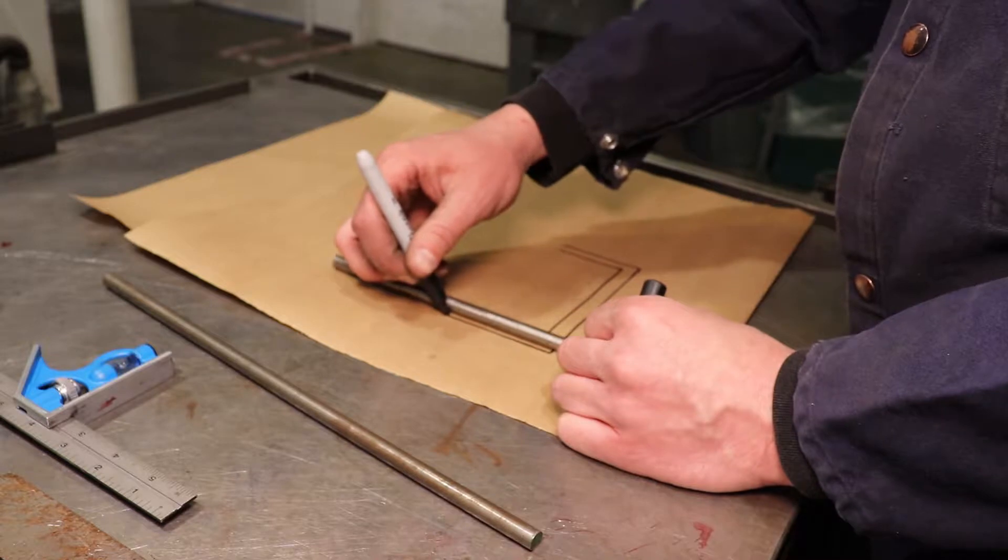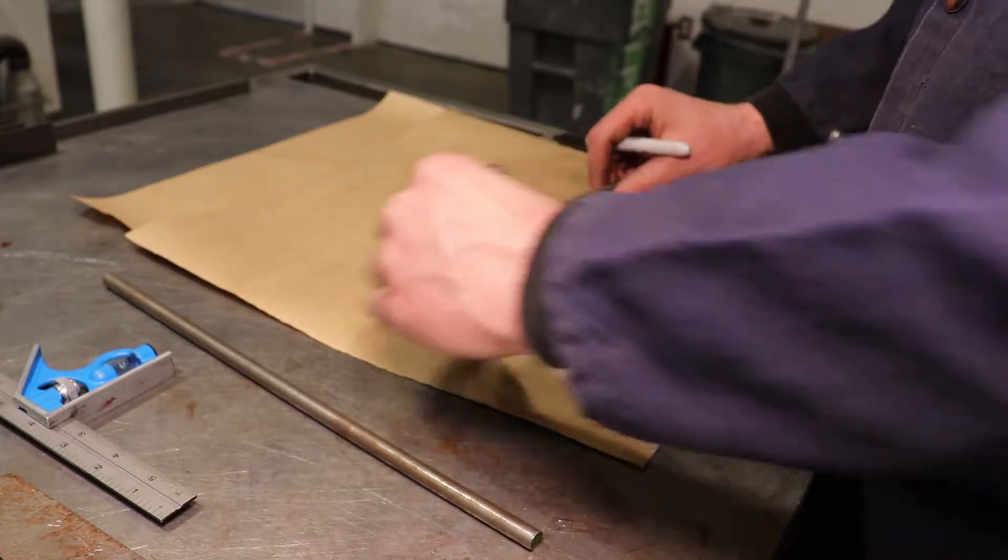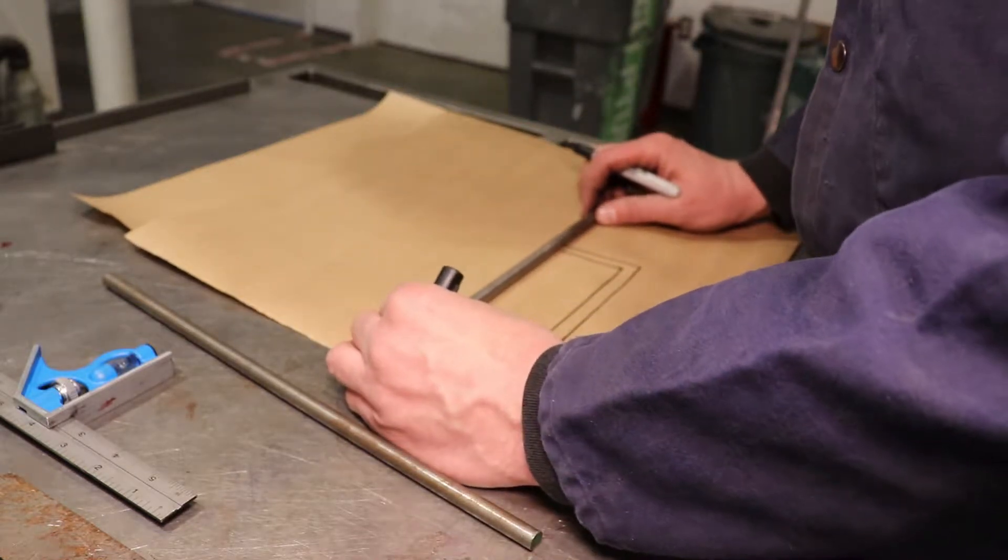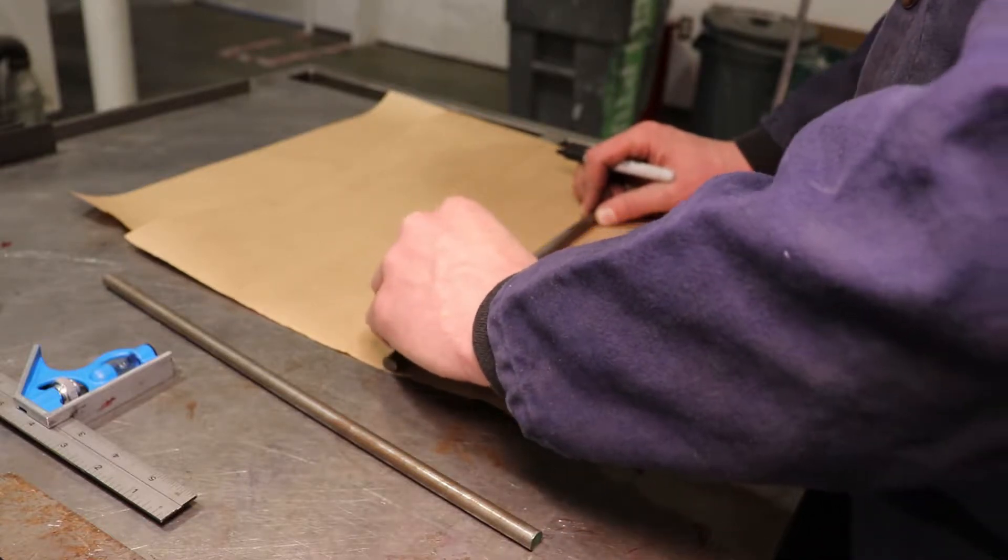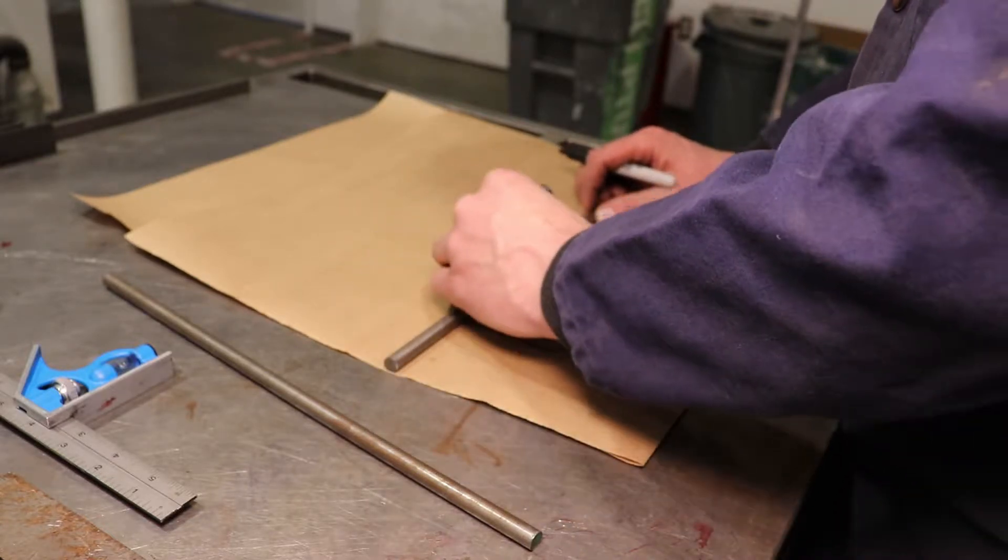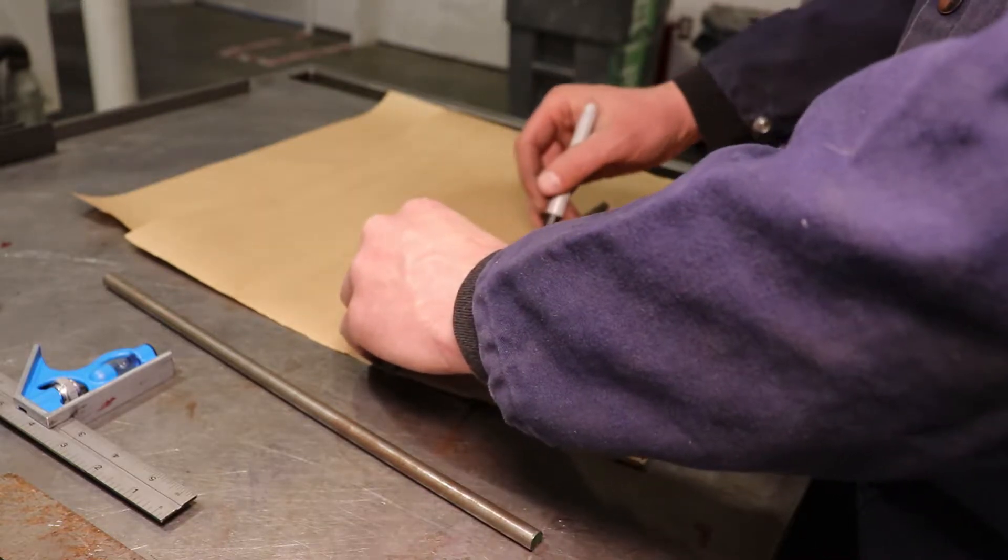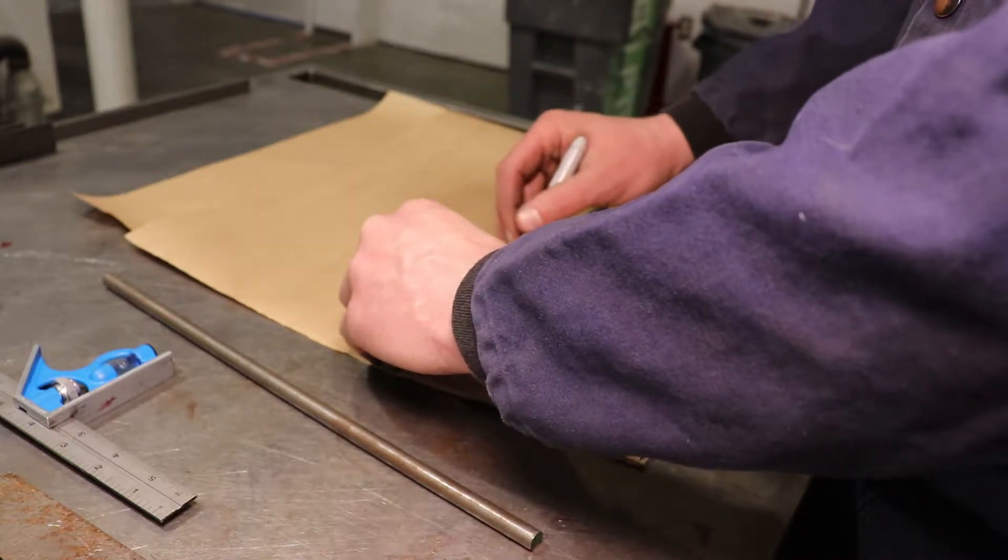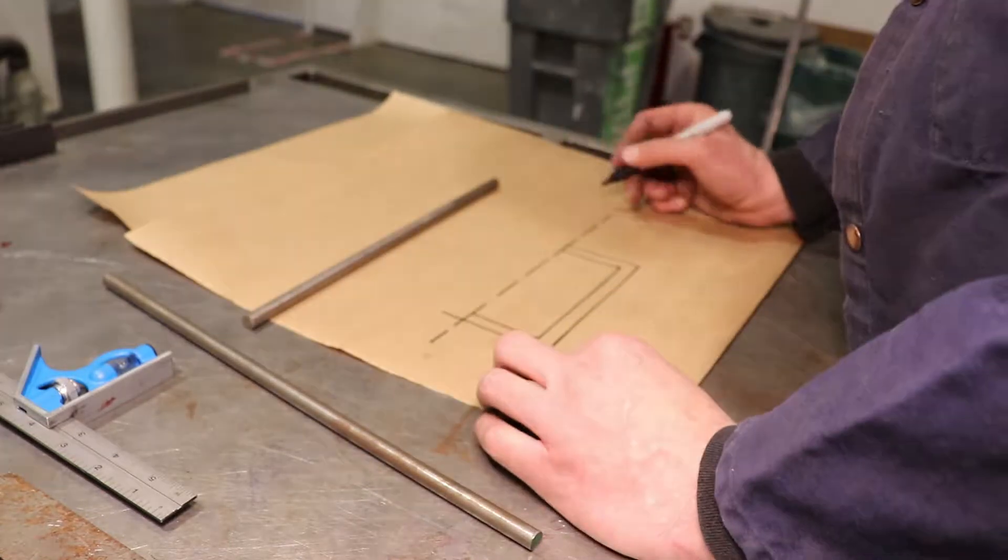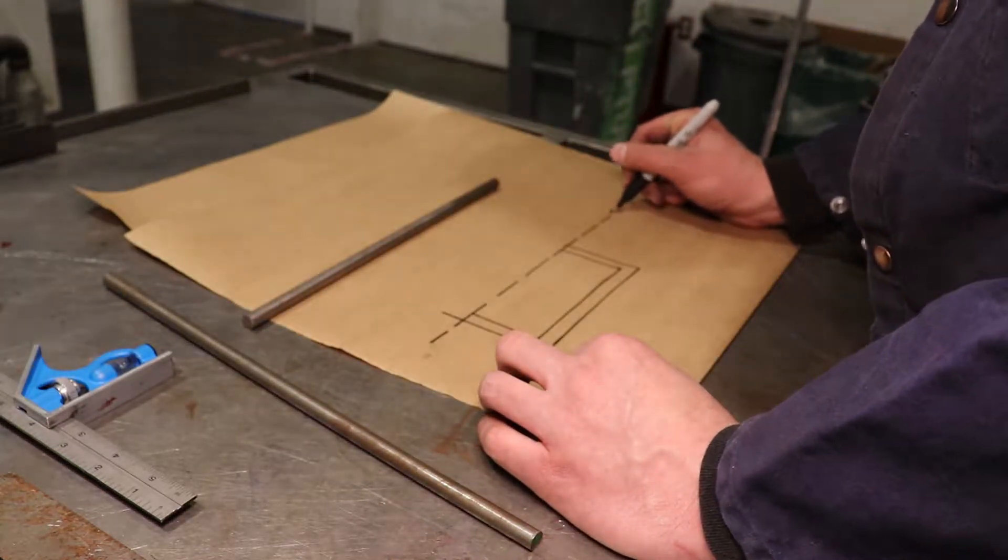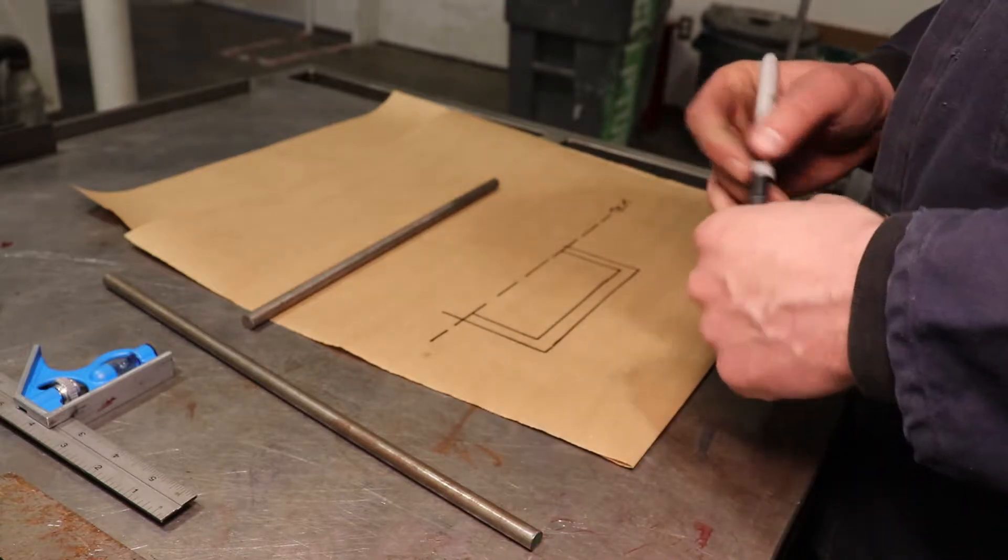And then I'm also going to incorporate a cut line. So I want the handle to be a certain depth, and so I'm just tracing that on there too, just a little dotted line, and that'll allow me to predict where the bends are going to start and end, as well as where to cut that last bend down to, and I'm labeling it as a cut line.